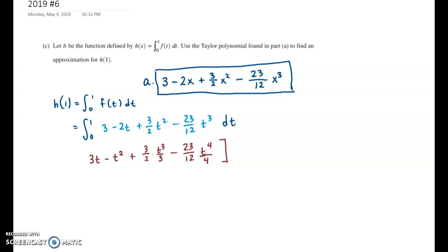And then I'm going to plug in my limits of integration, which are 0 and 1. So I have 3 minus 1 plus 1 half minus 23 over 48, it looks like, minus 0 because whatever I plug in, if I'm plugging in t equals 0, that's all going to be 0.